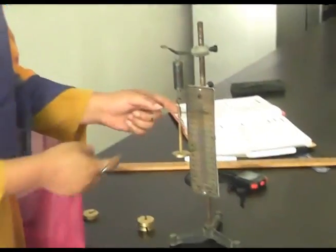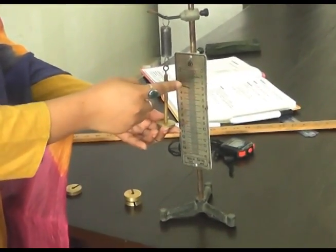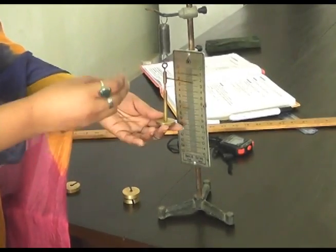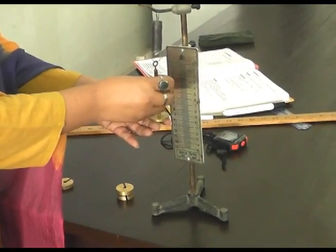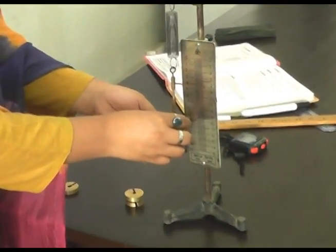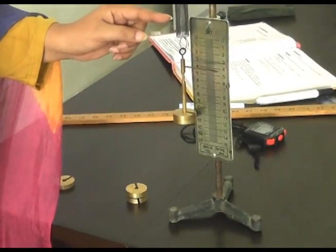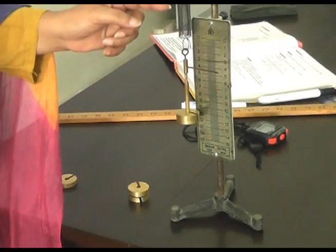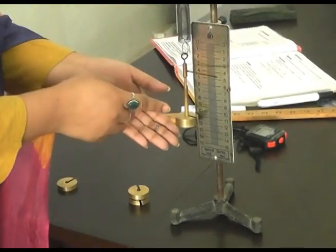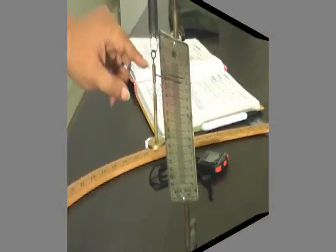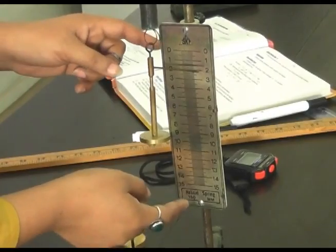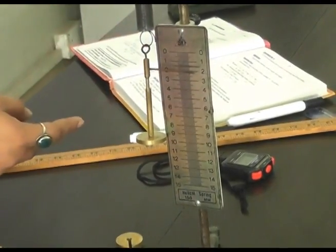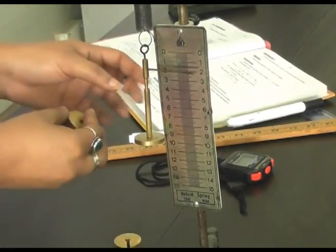Let's start the performance. This is the helical spring and this is the weight. This hanger including the pointer weighs 50 grams. I will add 50 more grams on this, now this becomes totally 100 grams. We can easily observe that extension in the spring is produced. Now we will observe the initial reading of the pointer on the meter rod and put it on the table, which is 1.90.